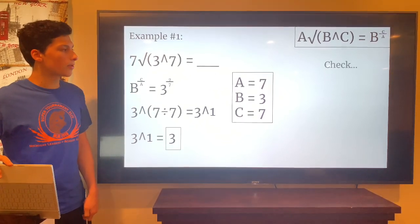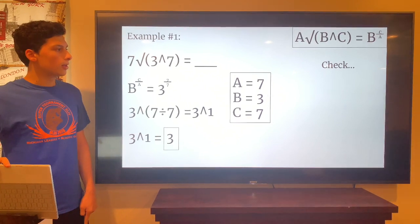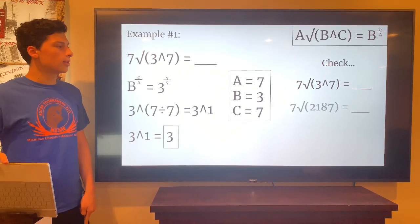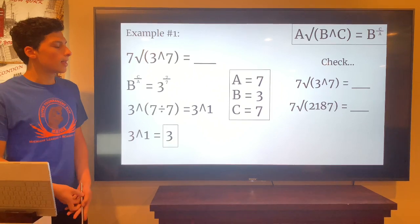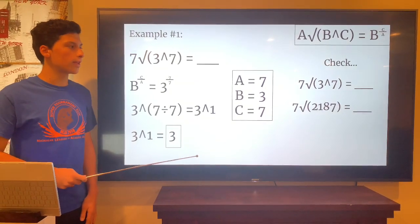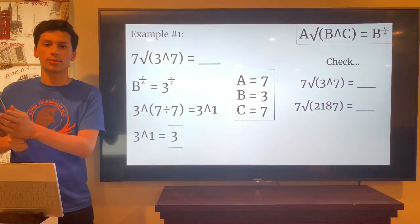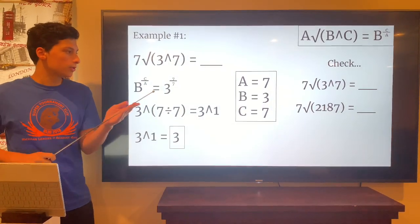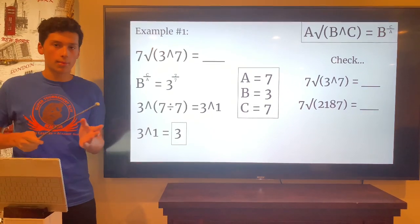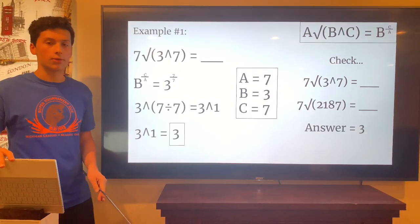To verify: the 7th root of (3 to the power of 7) equals the 7th root of 2,187, because 3 multiplied by itself 7 times equals 2,187. If you take the 7th root of that number on a calculator, you get 3 — so the math does work out.